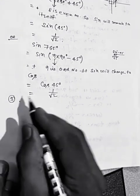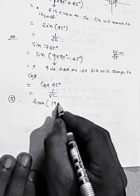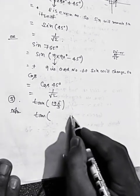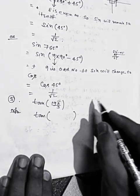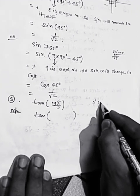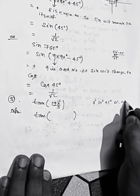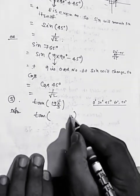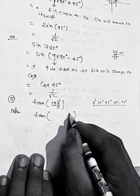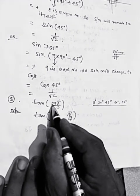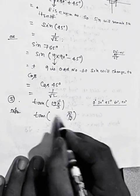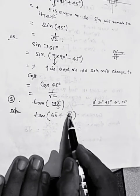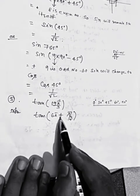Next question: find tan of 19π by 3. We know the values for 0, 30, 45, 60, and 90 degrees, so we bring theta into that range. Here theta is π by 3. To get 19π by 3: 6π plus π by 3 equals 18π by 3 plus π by 3 equals 19π by 3. So 19π by 3 can be written as 6π plus π by 3.